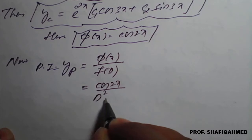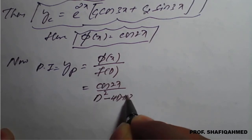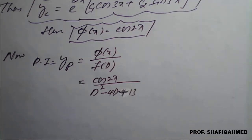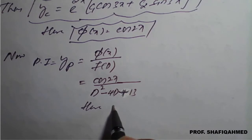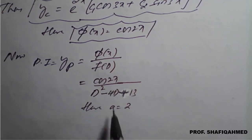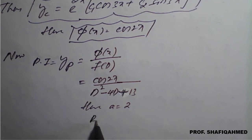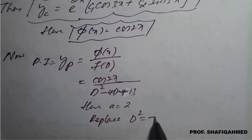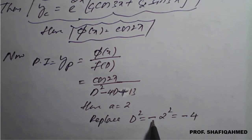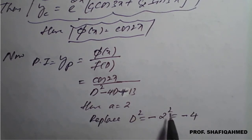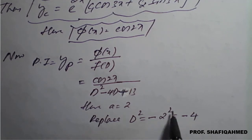So yp equals cos of 2x divided by d squared minus 4d plus 13. Here the value of a is 2, since the coefficient of x in cos 2x is 2. We replace d squared by minus a squared, that is minus 2 squared equals minus 4. Do not go for minus 2 whole square — the formula says minus times the a squared value. So d squared is replaced by minus 4.